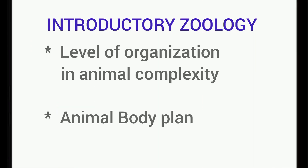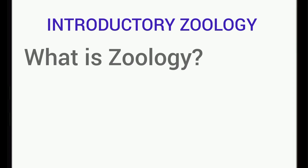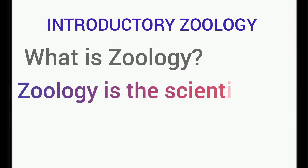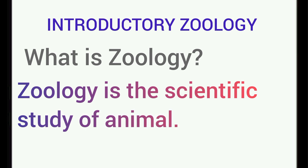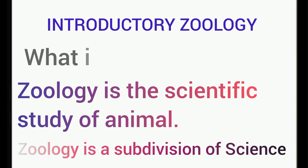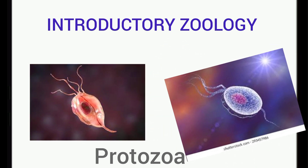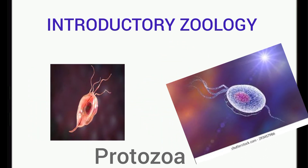Welcome to my introductory zoology class. In this class we are going to take a look at the levels of organization in animal complexity and animal body plan. Zoology is a scientific study of animals and it is commonly considered a subdivision of the field of science. Complexity in animals ranges from the simple protozoa, which is now placed in the kingdom Protista, to mammals, which are placed in kingdom Animalia.